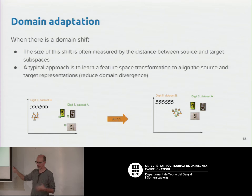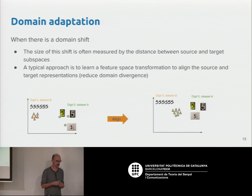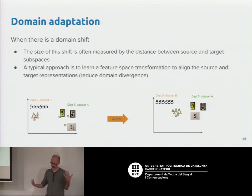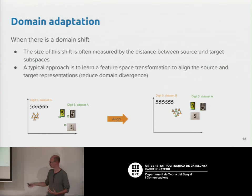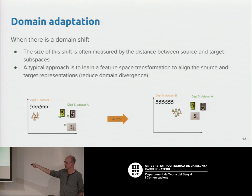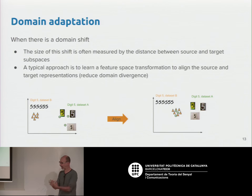Given this bias, the domain shift is measured by the distance between the source and target distributions. The problem is that in most cases we are not able to measure this distance directly. But if we were able to do that, there are techniques to align the two domains — modifying the feature extraction so that after alignment all features lay in the same region of the feature space. Unfortunately, in most cases we don't know the distance between the distributions.